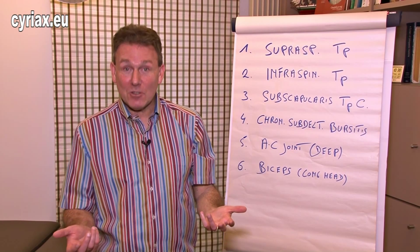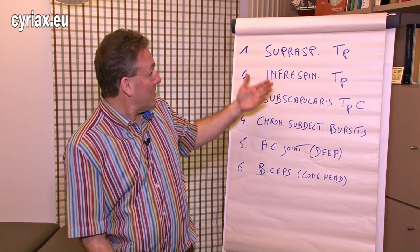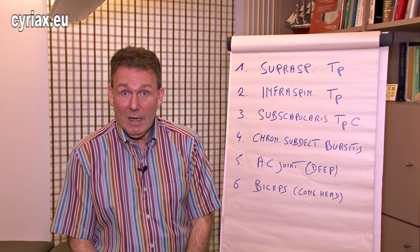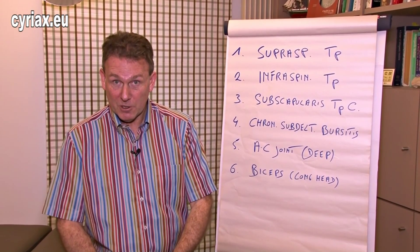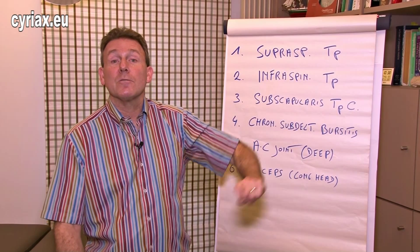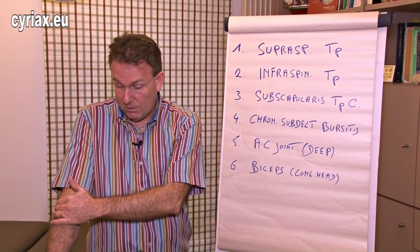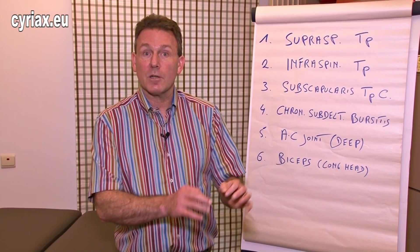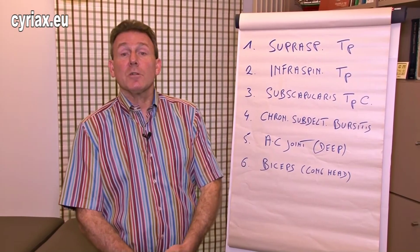There are a number of reasons to have a painful arc. The most common reason is a problem with our friend supraspinatus. There is a tendinitis or tendinosis of the supraspinatus, and more specifically the tenoperiostal part of the supraspinatus. So what do we find? We find pain on resisted abduction plus a painful arc.